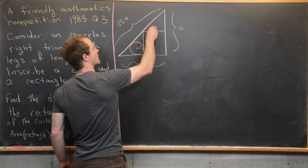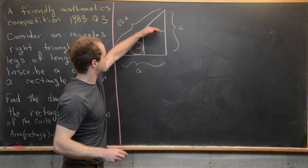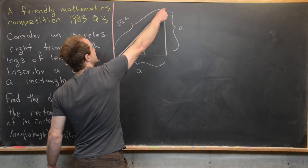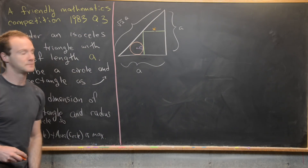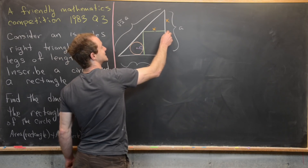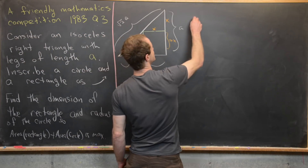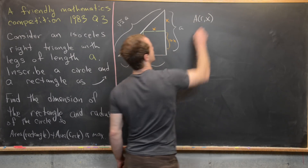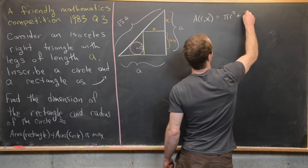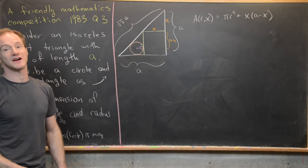Let's call this side of the rectangle length X. Because this upper part of the rectangle is parallel to this leg of the isosceles triangle, this small triangle here is similar to the larger triangle, which means this altitude of the triangle is also X. That makes this length here A minus X. So notice that our area function at the moment depends on two variables R and X, and we have pi·R² plus X·(A minus X). Now we want to use some geometry to get a handle on R in terms of X.